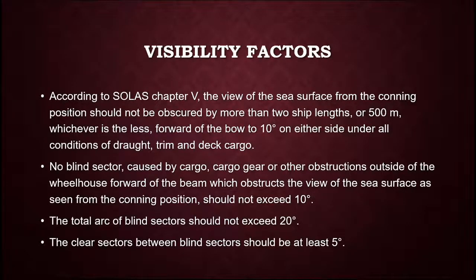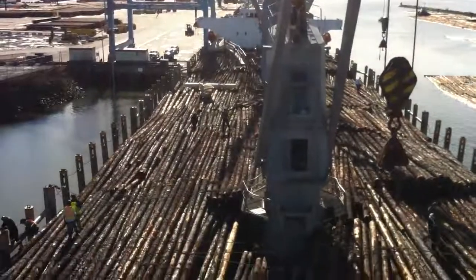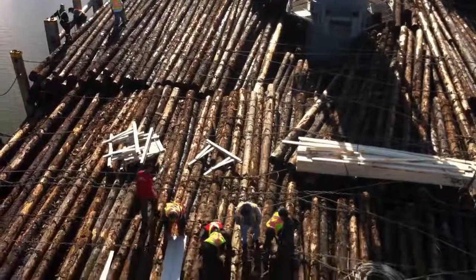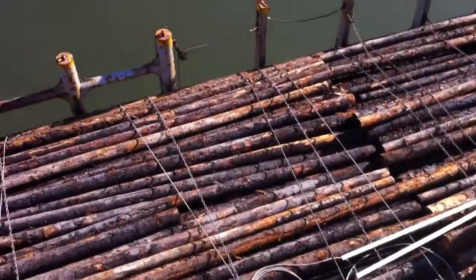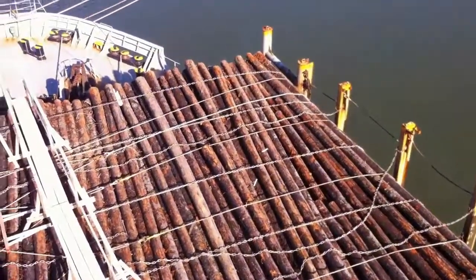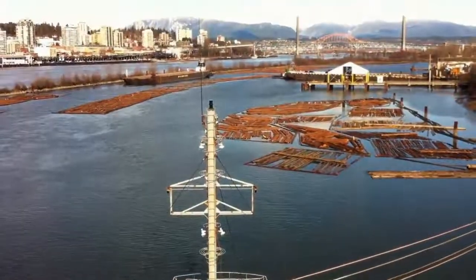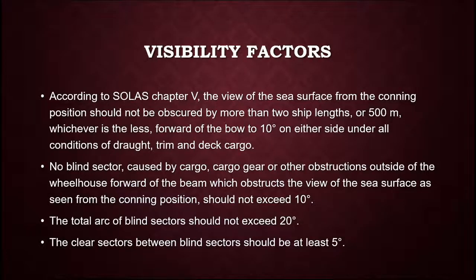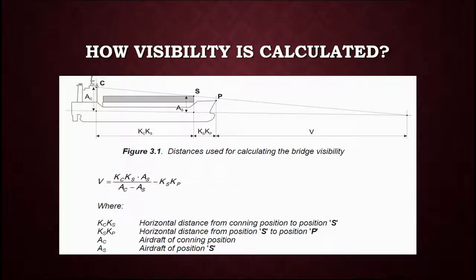According to SOLAS Chapter 5, the view of the sea surface from the conning position should not be obscured by more than two ships' length or 500 meters, whichever is less. Visibility should not be obscured forward of the bow to 10 degrees on either side under all conditions of draft, trim and deck cargo. Blind sectors should not exceed 10 degrees caused by cargo or cargo gear outside the wheelhouse forward of the beam. The total arc of blind sectors should not exceed 20 degrees, and the clear sectors between blind sectors should be at least 5 degrees. A formula for calculating bridge visibility can be found in timber code, using horizontal distance and air draft positions.